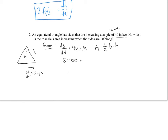The area ends up being one-half times s times the height. Since it's an equilateral triangle, all angles are 60 degrees. Dropping a height creates a 30-60-90 right triangle, with the base being s over 2. Using 30-60-90 rules, the height equals s over 2 times the square root of 3. We substitute that in, expressing everything in terms of s.